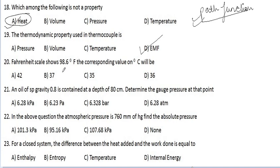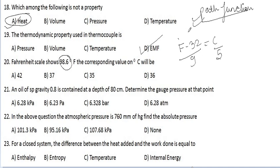The Fahrenheit scale shows 98.6°F — what is the equivalent on the centigrade scale? Applying the formula C/5 = (F − 32)/9 with F = 98.6, the answer comes out to be 37°C. So the correct option is option B.